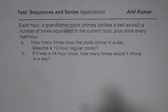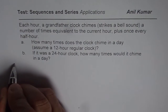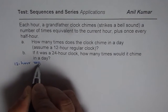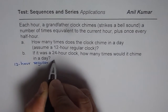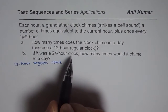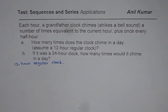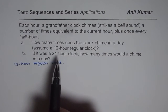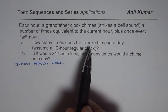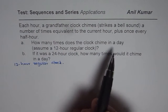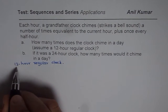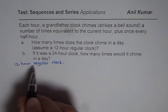First let us consider a 12-hour regular clock. In this case we know in one day there are 24 hours. So what we will do here is find the number of times the clock chimes in 12 hours and then multiply by 2 to get what will happen in one day. So let us consider 12 hours.